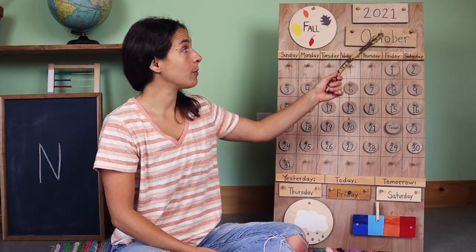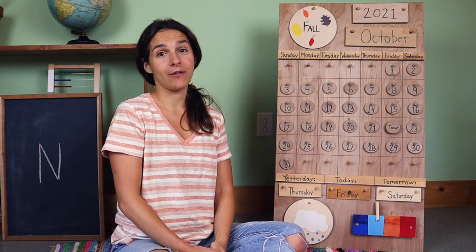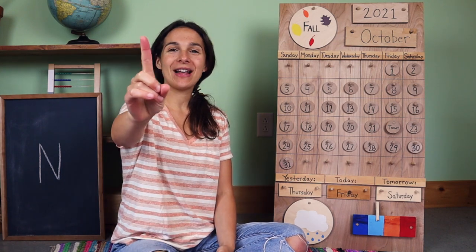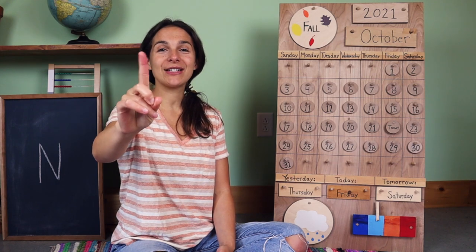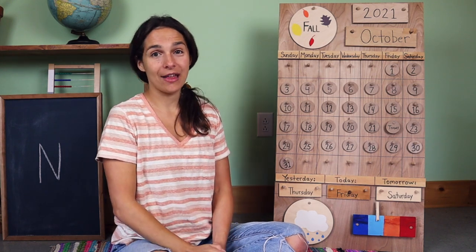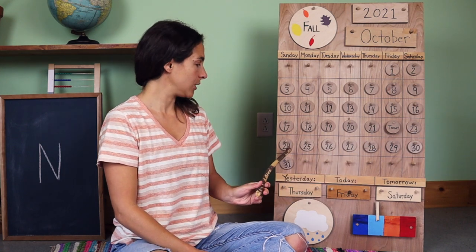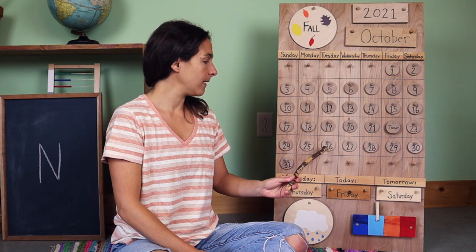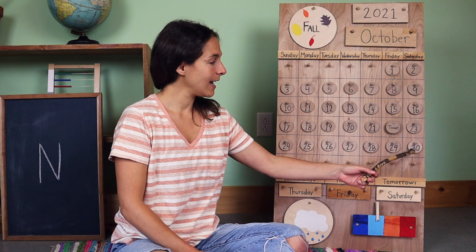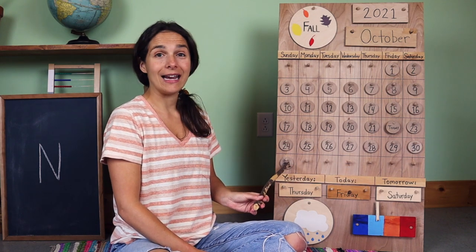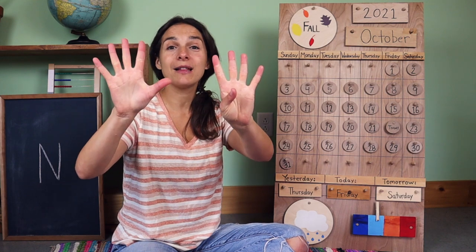The month of October is almost over, so let's see how many days are left. Take out your counting fingers, we'll warm them up to give them a little stretch, and let's count together. After today, we have one, two, three, four, five, six, seven, eight, nine. We only have nine more days left in the month of October.